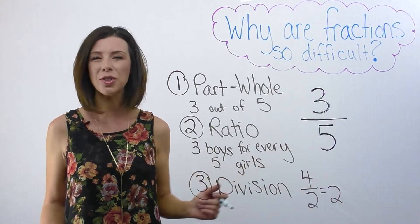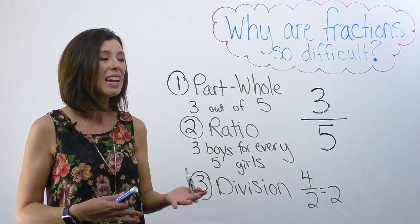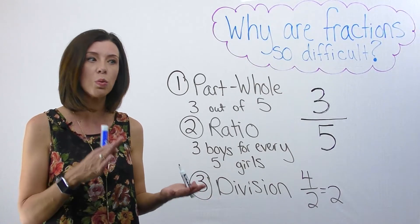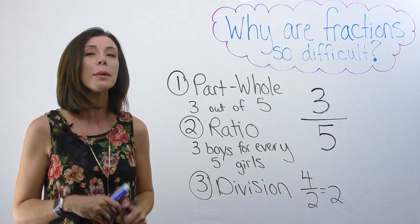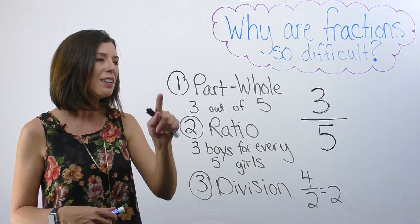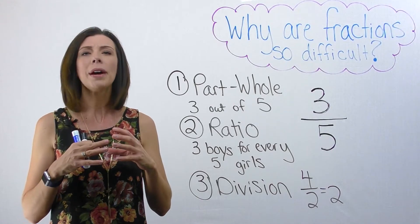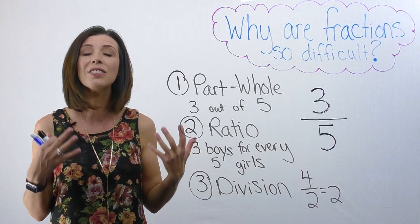So why are fractions so difficult? Because look at all the ways that I can interpret these fractions. It's difficult to sort out in which case are we using which different scenario. Are we referring to it as a ratio? Is it a part to whole? We can even think of this part to whole as not just out of one whole, but if I have five balls and three of them are red, I can think of it that way too.